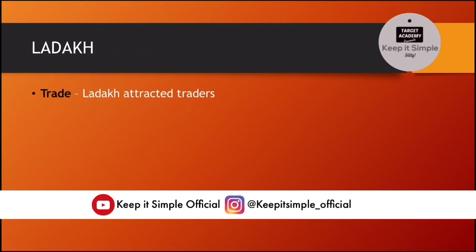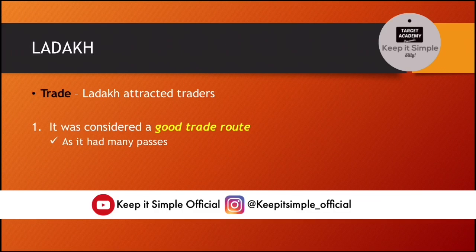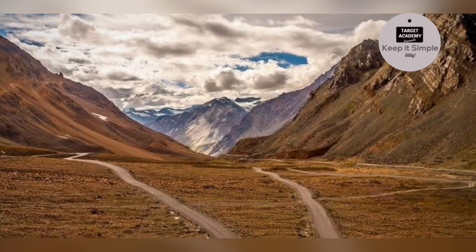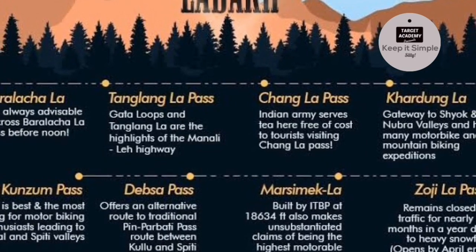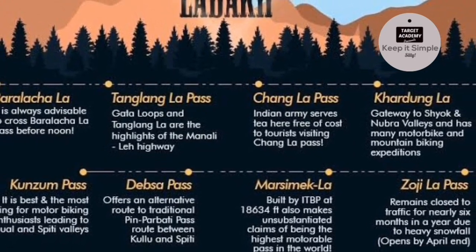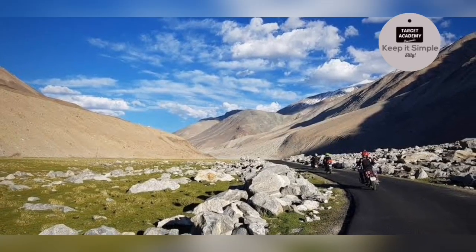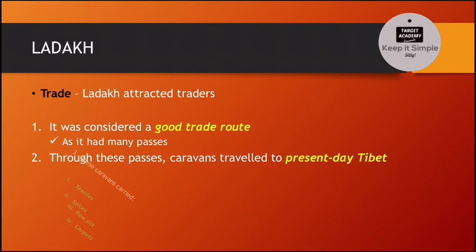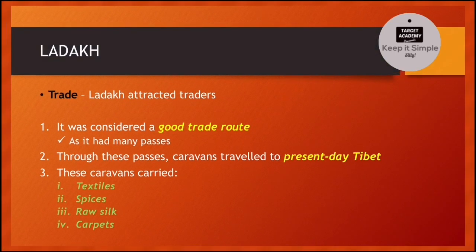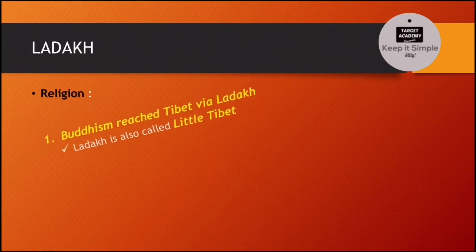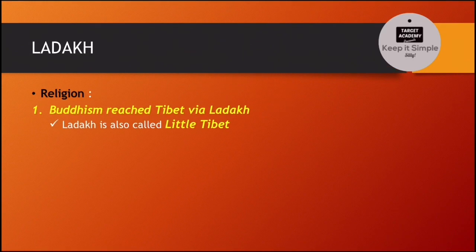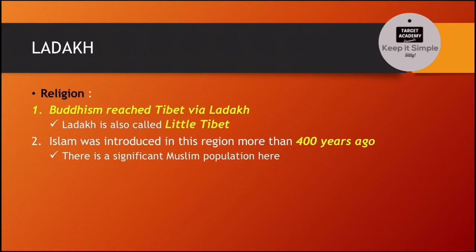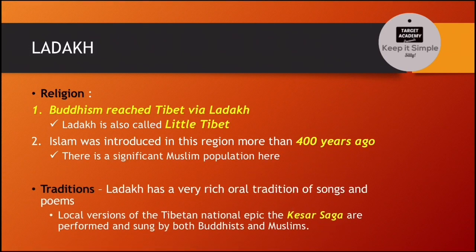Ladakh attracted a lot of traders. It was considered a good trade route as it had many passes. Through these passes, caravans traveled to present-day Tibet. These caravans carried textiles, spices, raw silk and carpets. Religion Buddhism reached Tibet via Ladakh — Tibet में भी Buddhism Ladakh के through ही पहुँचा था — and Ladakh is also called Little Tibet. Islam भी इस region में 400 years पहले introduce किया गया था, और यहाँ पे एक significant Muslim population है।